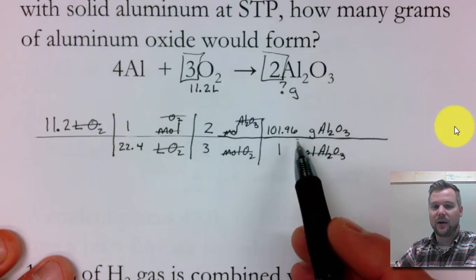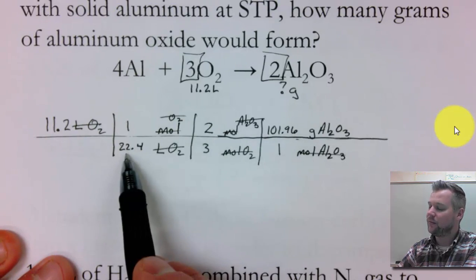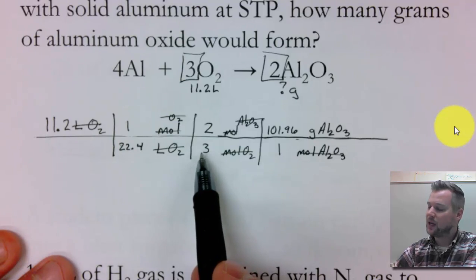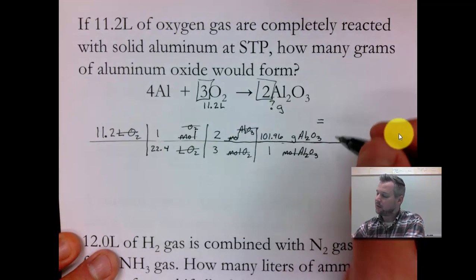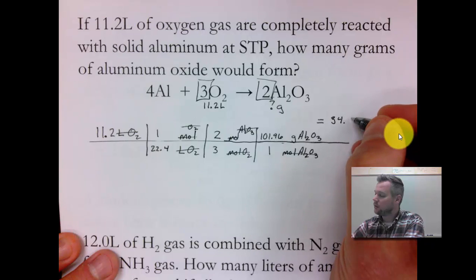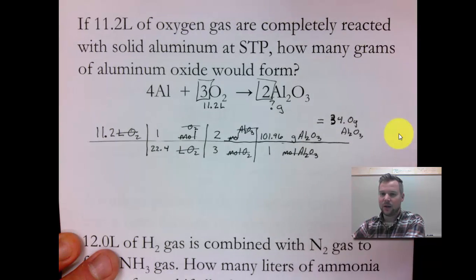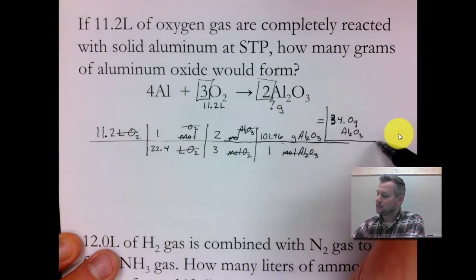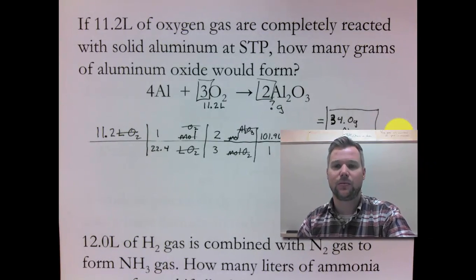Plugging this into my calculator: 11.2 times 2 times 101.96, divide by, in parentheses, 22.4 times 3. To 3 sig figs because of the 11.2, my calculator tells me 34.0 grams of aluminum oxide. Box our answer so it's easy to find. So that was an example of a volume-to-mass stoichiometry problem.